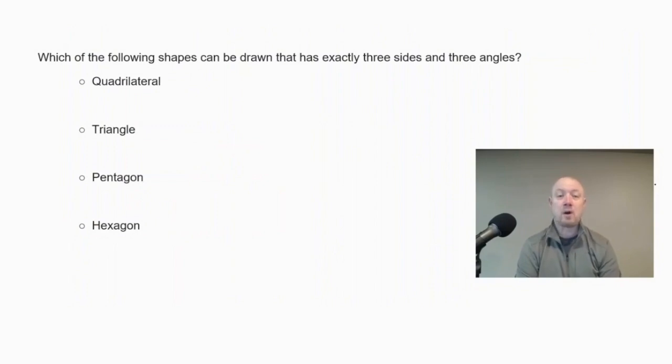Which of the following shapes can be drawn that is exactly three sides and three angles? Is it a quadrilateral, triangle, pentagon, or hexagon?